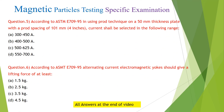Question 5: According to ASTM E709-95, when using the prod technique on a 50 mm thickness plate with a prod spacing of 101 mm, the current shall be selected in the following range: (A) 300 to 450 A; (B) 400 to 500 A; (C) 500 to 625 A; (D) 550 to 700 A.